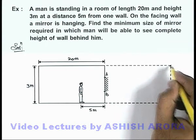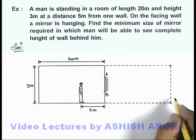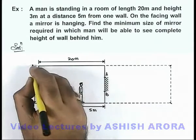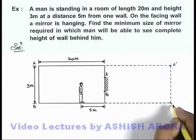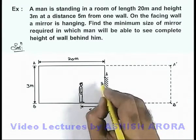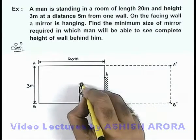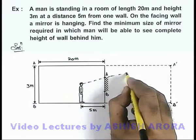if the man wishes to see this complete wall behind him, say if this wall is AB then the image of this wall will be A-prime-B-prime, and to see this the edges of the wall must be in the field of view of the man.